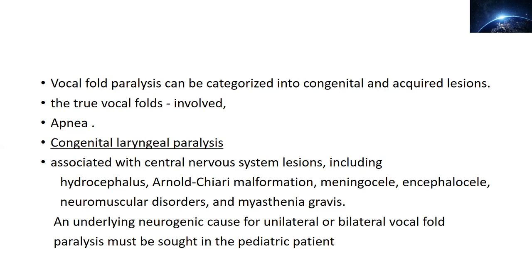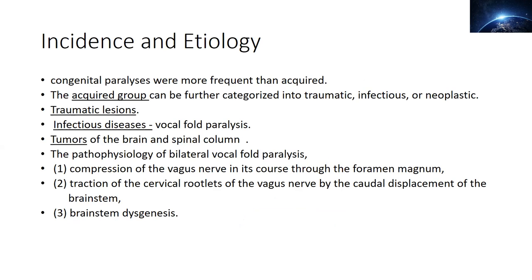Myasthenia gravis can also present with such laryngeal anomalies in children congenitally, and these are usually linked with the nervous system. When a baby is born and the gynecologist or pediatrician sees some sort of neurological deficit, they sort out the underlying cause, and if needed, the otolaryngologist is called for further intervention. The incidence of such cases can be either congenital or acquired.